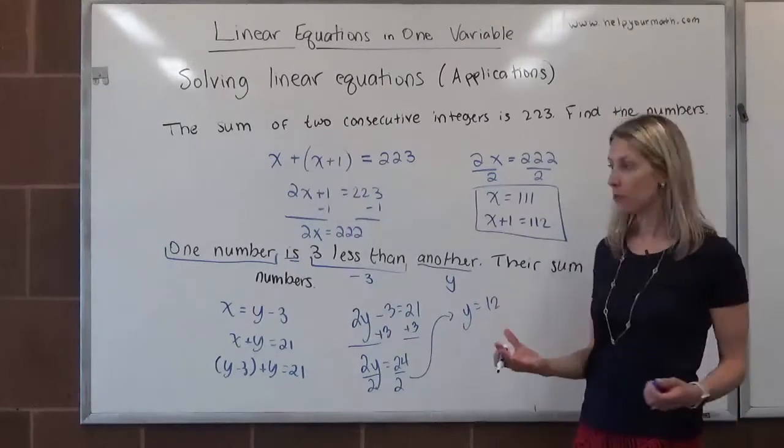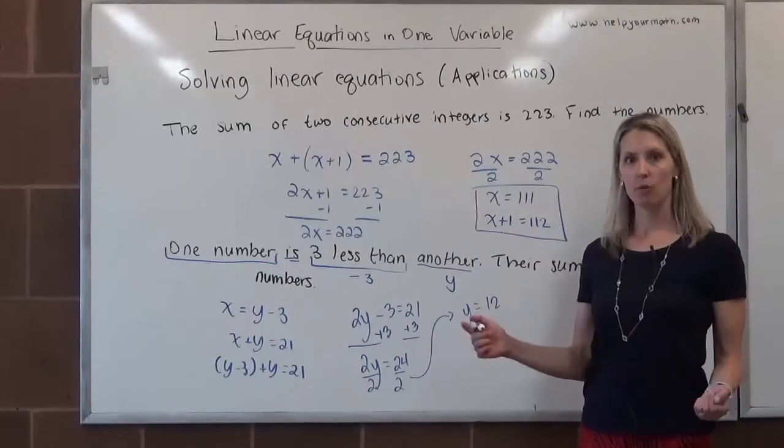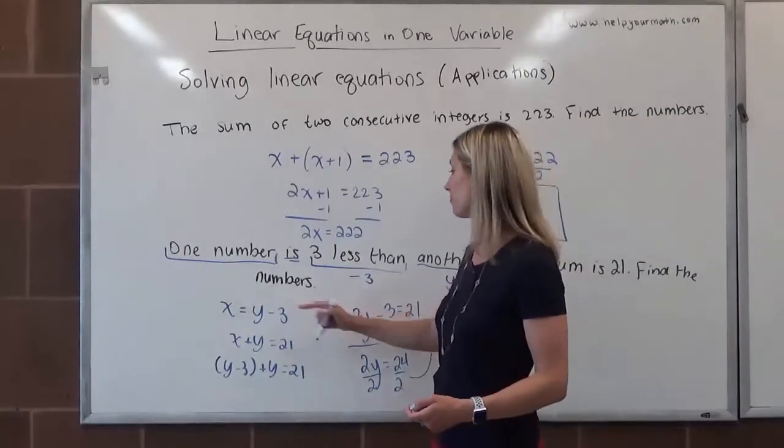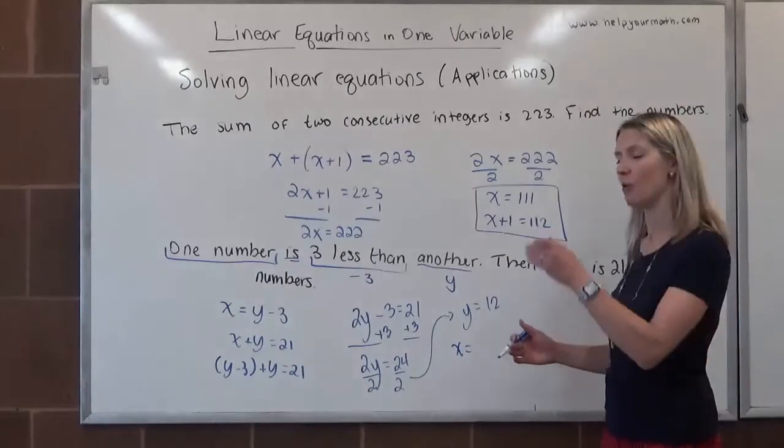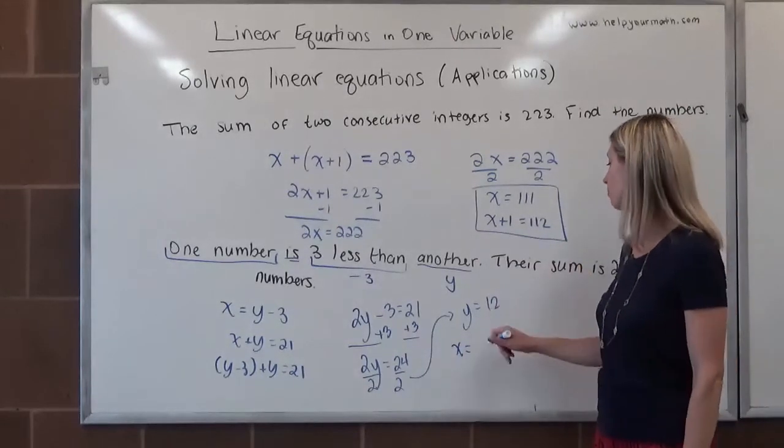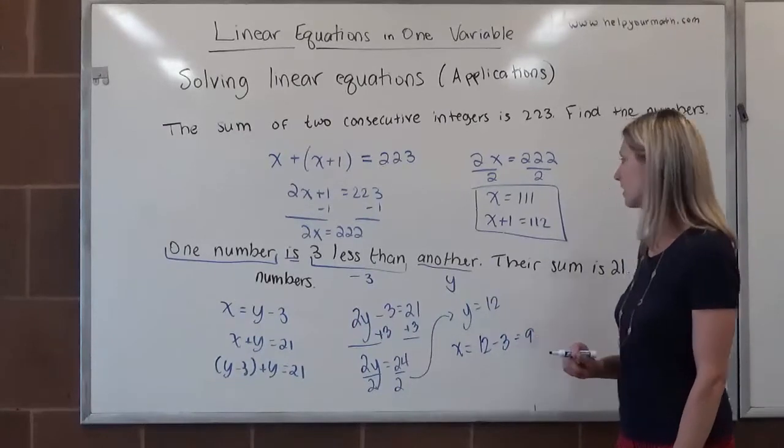We want to find both numbers so we know one number, y, is 12. To figure out the value of x, we'll go back to that equation. Because we know that x is y minus 3, we will substitute in what we know y to be the same as, which is 12, 12 minus 3, and so we know that x is 9.